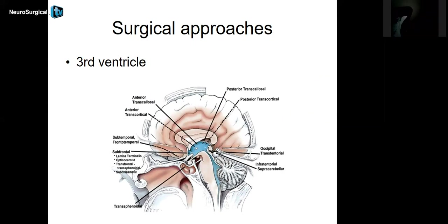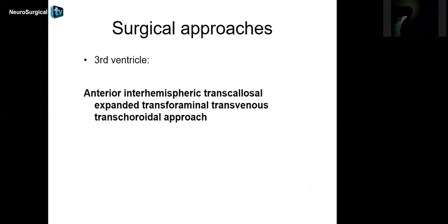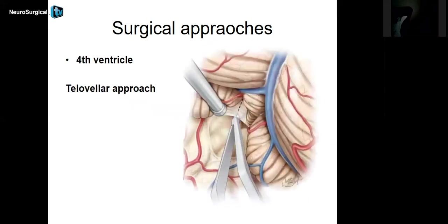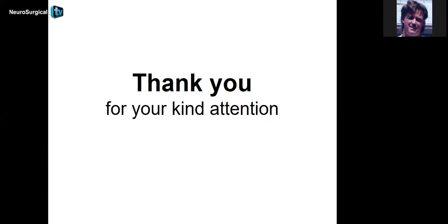With the third ventricle, various approaches include the transsphenoidal approach, transcallosal approach, and transcortical approaches. One of the most used is the anterior interhemispheric transcallosal through the corpus callosum — expanded transforaminal through the foramen of Monroe — and transvenous transchoroidal approach. Another procedure is the anterior transfrontal transforaminal approach. For the fourth ventricle, the best approach used is the telovelar approach, which provides safe access and a cautious presentation of the vascular structures to be preserved during the surgical approach.